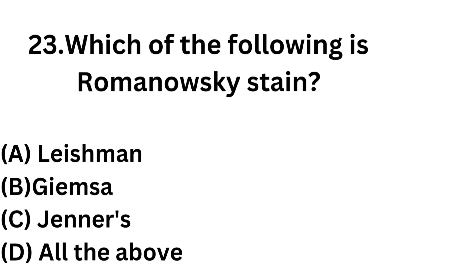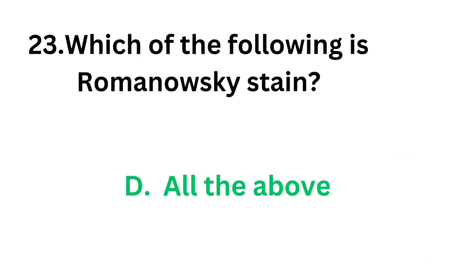Question number 23: Which of the following is a Romanovsky stain? Option A: Leishman stain. Option B: Jamesa stain. Option C: Jenner stain. Option D: All of the above. Leishman stain is a Romanovsky stain. Jamesa and Jenner's are also Romanovsky stains. So the correct answer is Option D, all of the above. All of the following options are Romanovsky stains.